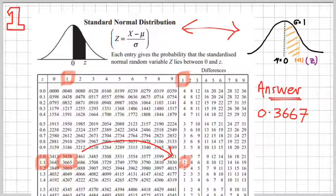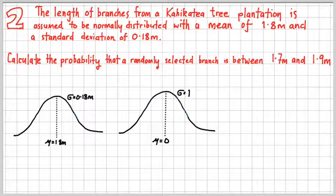So, here we go. The length of branches from a kahiketia tree plantation are again normally distributed with a mean of 1.8 meters, and a standard deviation of 0.18 meters. So, we've got the same scenario here. This time, we are going to calculate the probability that a randomly selected branch is between 1.7 meters and 1.9 meters. Take a moment and try and picture what that looks like.